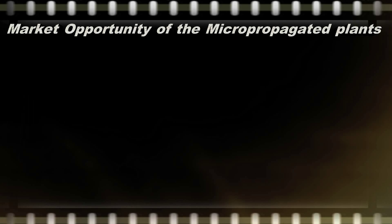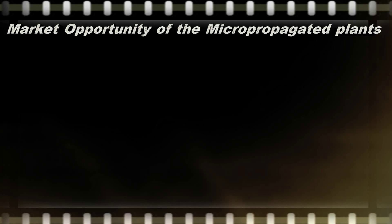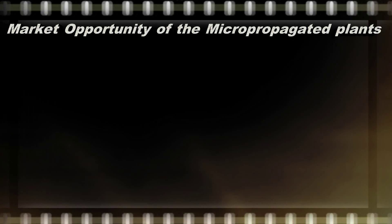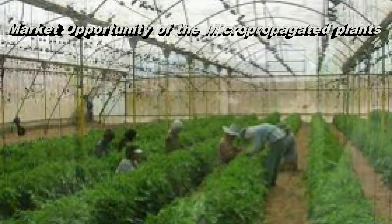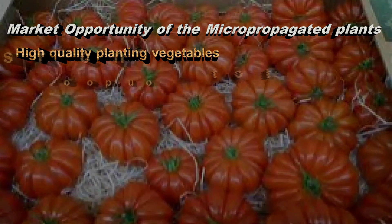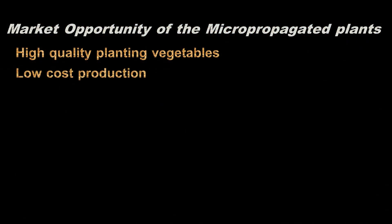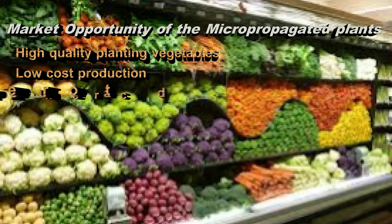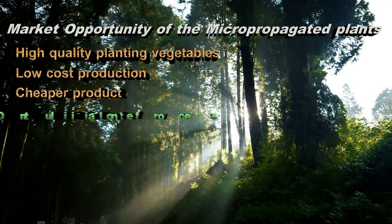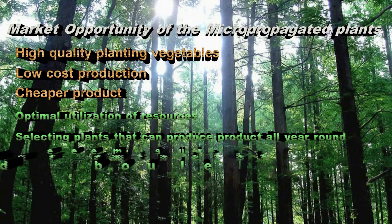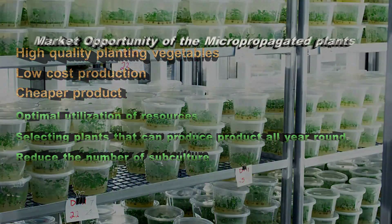We are now talking about the market opportunity of micropropagated plants. In this 21st century, micropropagated plants may give many advantages to both plant breeders and consumers. By using this plant tissue culture technique, also known as micropropagation, producers, farmers, and nursery owners can grow high-quality planting vegetables at low cost production. This may also lower the price of the product. Low cost production strategies include optimal use of equipment, efficient utilization of resources, selecting plants that provide year-round production, and having sufficient mother culture to reduce the number of subcultures and avoid variation.